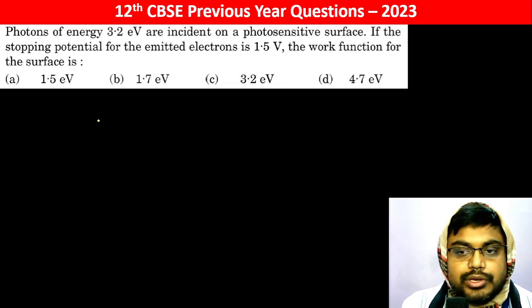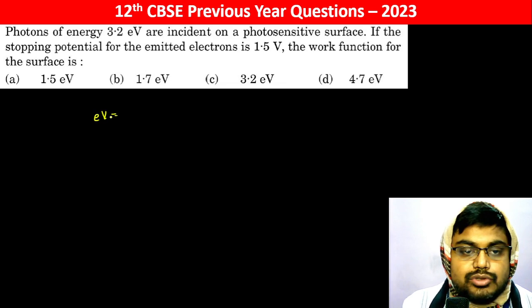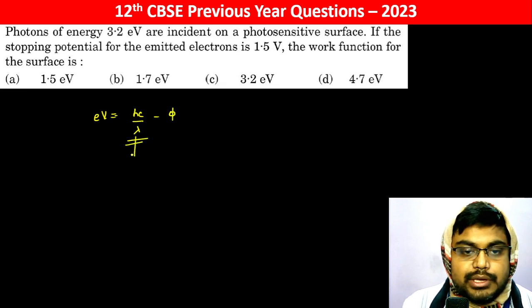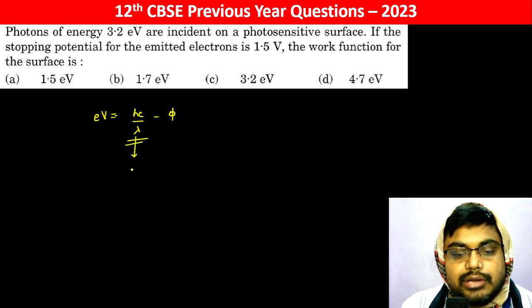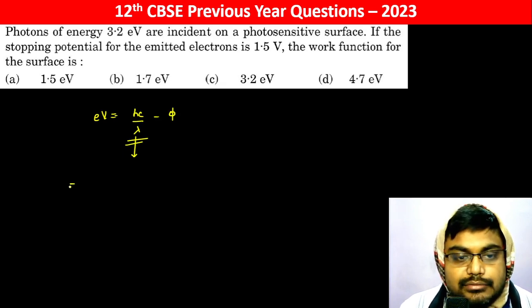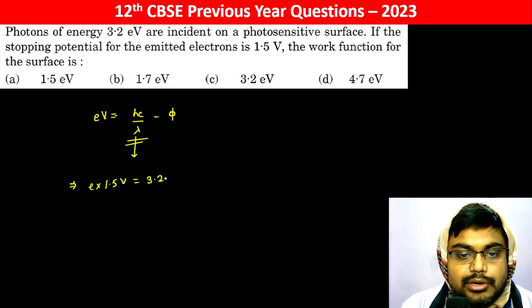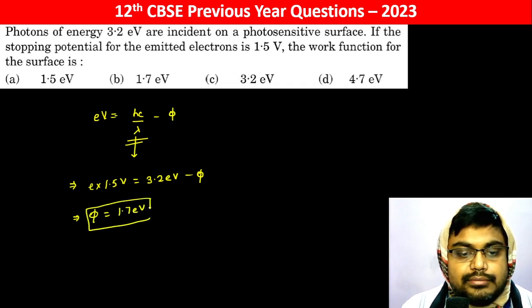This is a formula-based question. eV should be equal to hc/λ minus φ, where hc/λ is the energy of the incident photons. So the stopping potential 1.5 volt equals 3.2 electron volt minus φ. This simply gives φ equal to 1.7 electron volt.